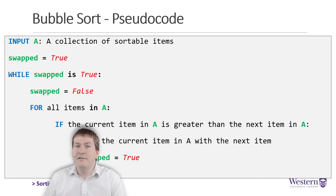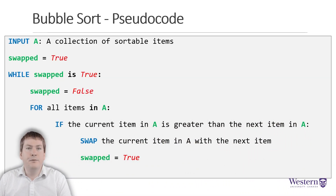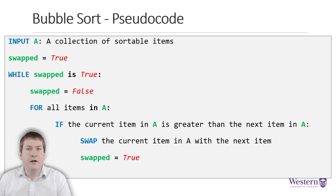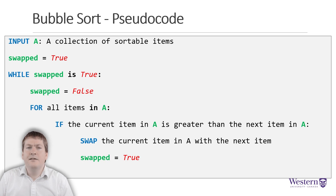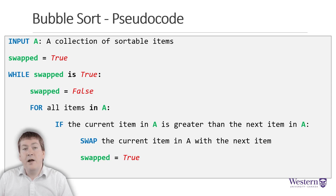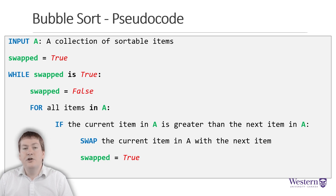Here we have the pseudocode for the bubble sort algorithm. Pseudocode is a human readable and basic description of what we want a computer program or algorithm to do. It's not code that we can put into a computer and run. Rather, it's for explaining the logic of an algorithm to another human.